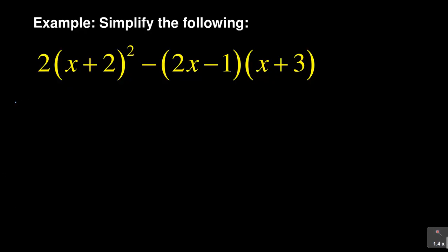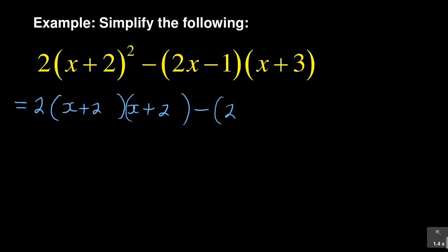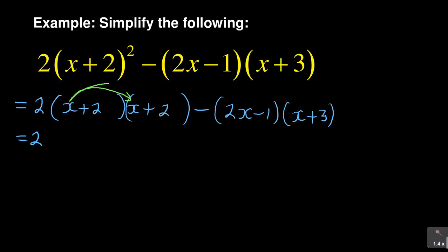So it will become — this will be equal to: before you do anything, you have 2. Now this squared part means you have 2 of those brackets, which is (x plus 2) and (x plus 2). So you need to be very sensitive to that. And then minus (2x minus 1) and you have (x plus 3).